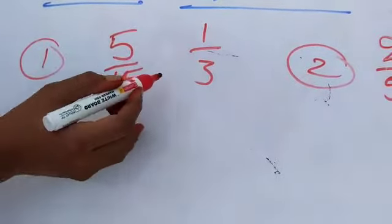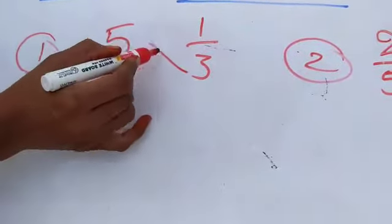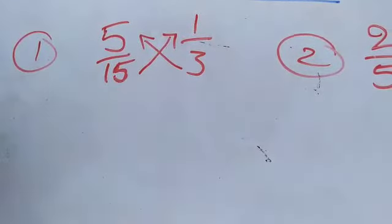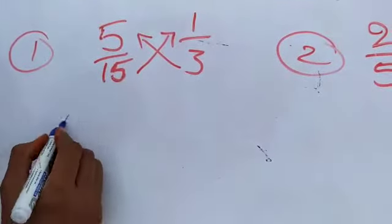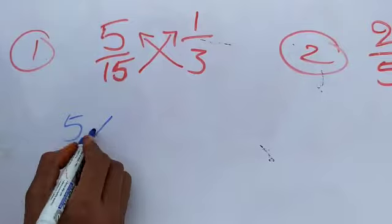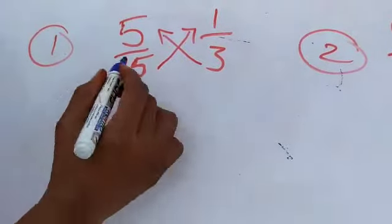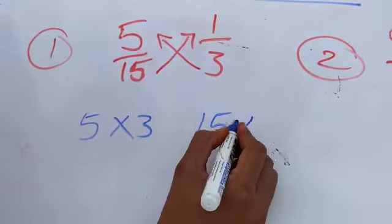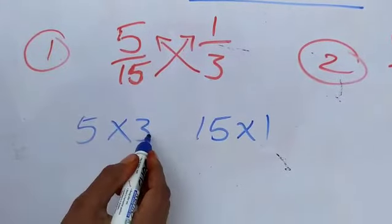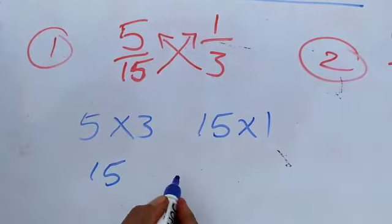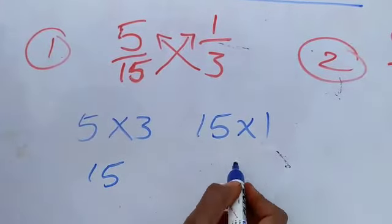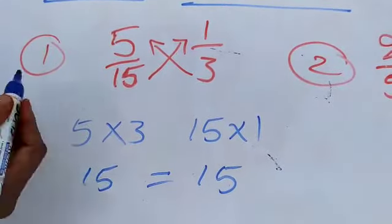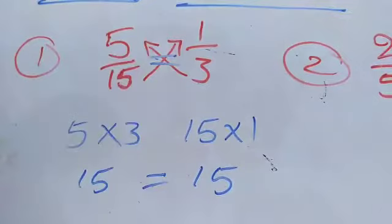We do cross multiplication. 5 into 3 equals 15, and 15 into 1 equals 15. These two products are equal, so these fractions are also equal.